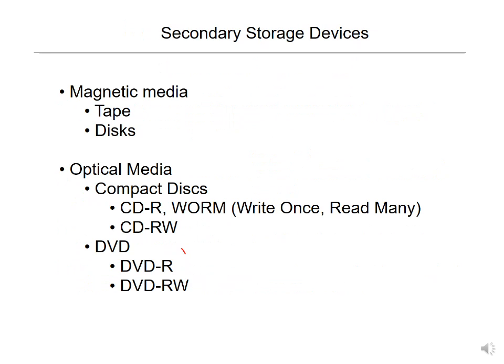There are types of secondary storage: magnetic media, which includes tape and disks; optical media, which includes compact disks such as CD-ROMs and DVDs. DVD-R means DVD Recordable, which can only be written once, and DVD-RW means DVD Rewritable, which can be written again. The next slides have the abbreviations for CD, DVD, and their variants.